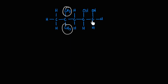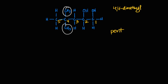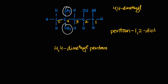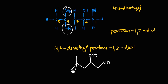Now two alcohol groups and two CH₃ substituents. From the right, the first alcohol is on carbon one; from the left, it's on carbon four. The right wins, so numbering is one, two, three, four, five. The branch is a 4,4-dimethyl group, the parent chain is five carbons — 'pentan' — and the alcohols are on positions one and two — '1,2-diol.' Full name: 4,4-dimethylpentane-1,2-diol.